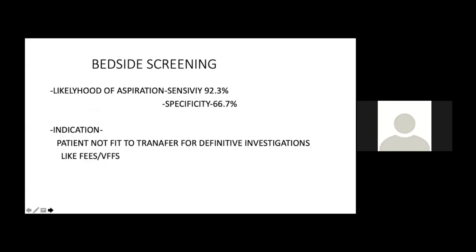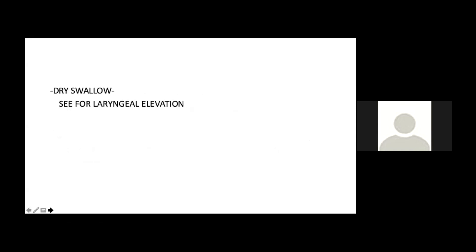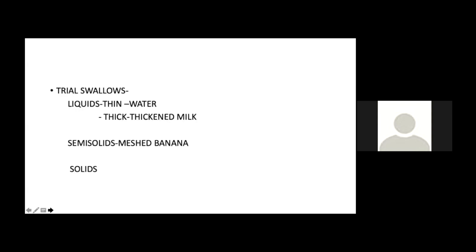Bedside screening for dysphagia is done in patients not fit for FEES or VFS. Its sensitivity is more than 90% but specificity is approximately 66%. First, observe dry swallow and assess laryngeal elevation — the most critical part. If the larynx does not elevate, the cricopharynx won't open, food won't reach the esophagus, and it goes below the vocal cords causing aspiration. Then trial swallows of liquid, semi-solid, and solids are performed.